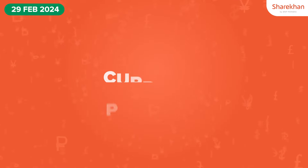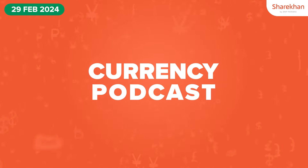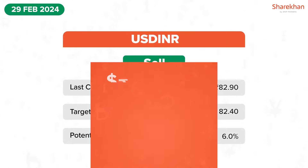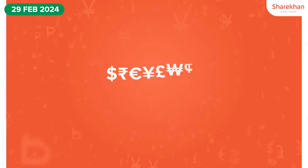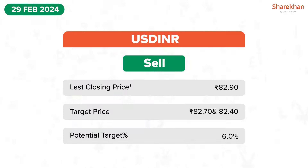Therefore, we will continue to suggest the bearish trend, accompanied by witnessing MACD with negative crossover, for the downside target of 82.70 and 82.40 levels in the near term. On the upside, key resistance holds at 83.137 level and a break above will reactivate the bullish trend scenario. Thank you.